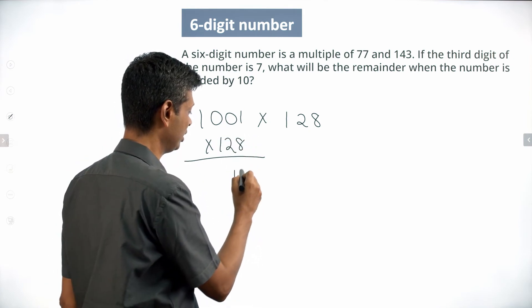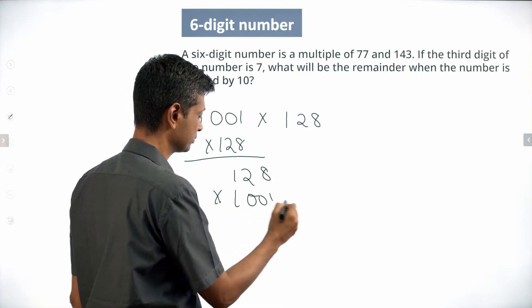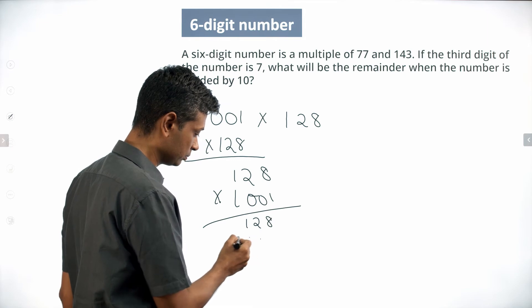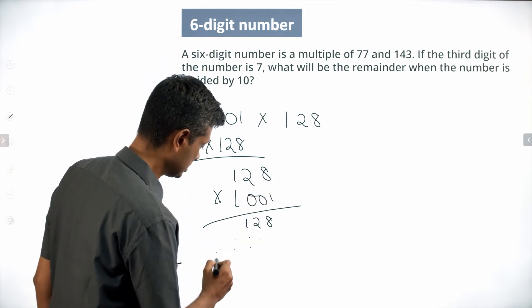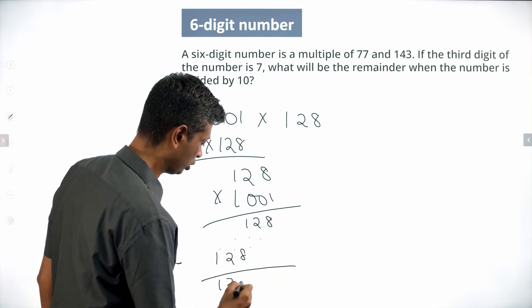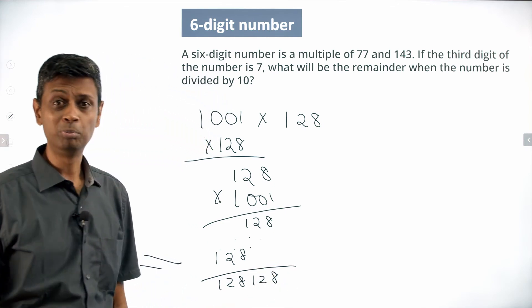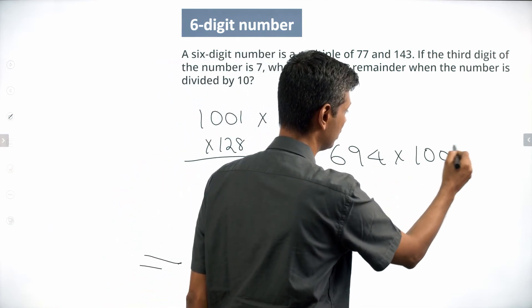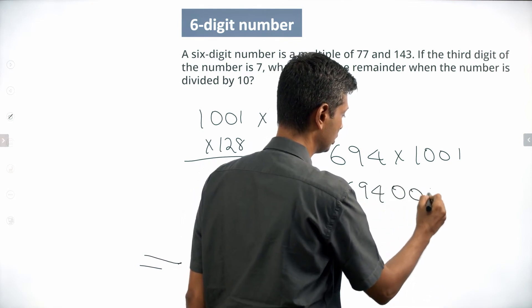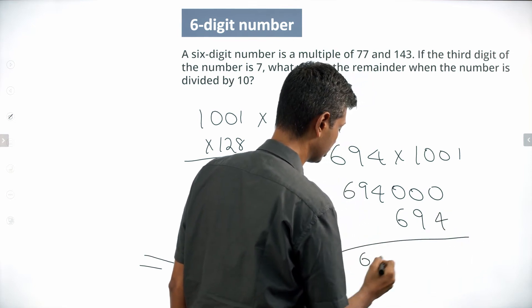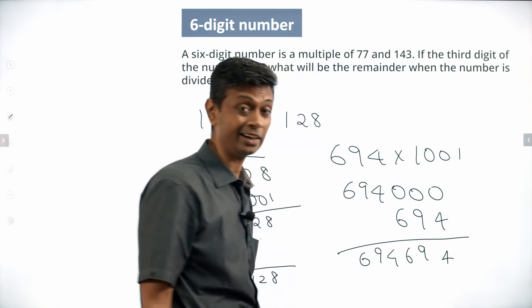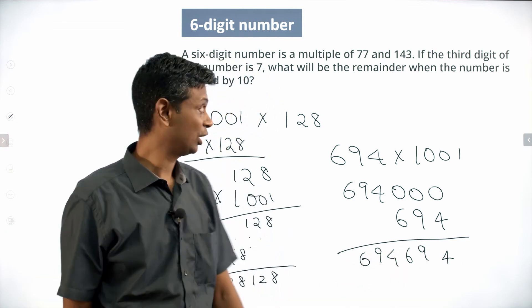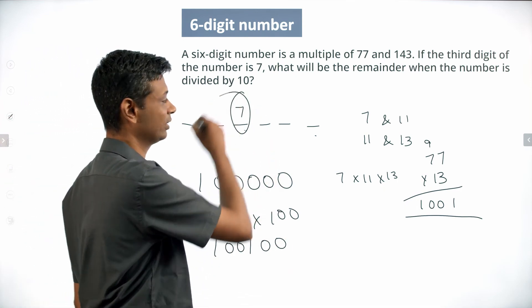Think about it as 128 times 1001. Using traditional multiplication: 128 times 1 is 128, and 128 times 1000 is 128000, giving 128,128. Beautiful! More generally, consider 694 times 1001: that is 694 times 1000 plus 694, which is 694,694. So if you multiply any three-digit number by 1001, it simply repeats that three-digit number to form a six-digit number.